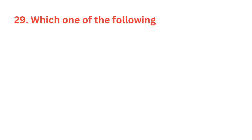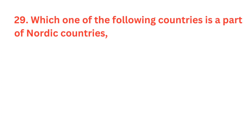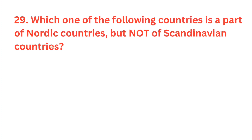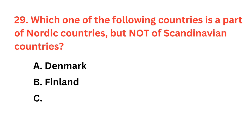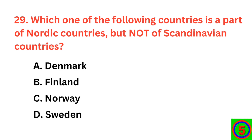Which one of the following countries is a part of Nordic countries but not of Scandinavian countries? The correct answer is option B, Finland.